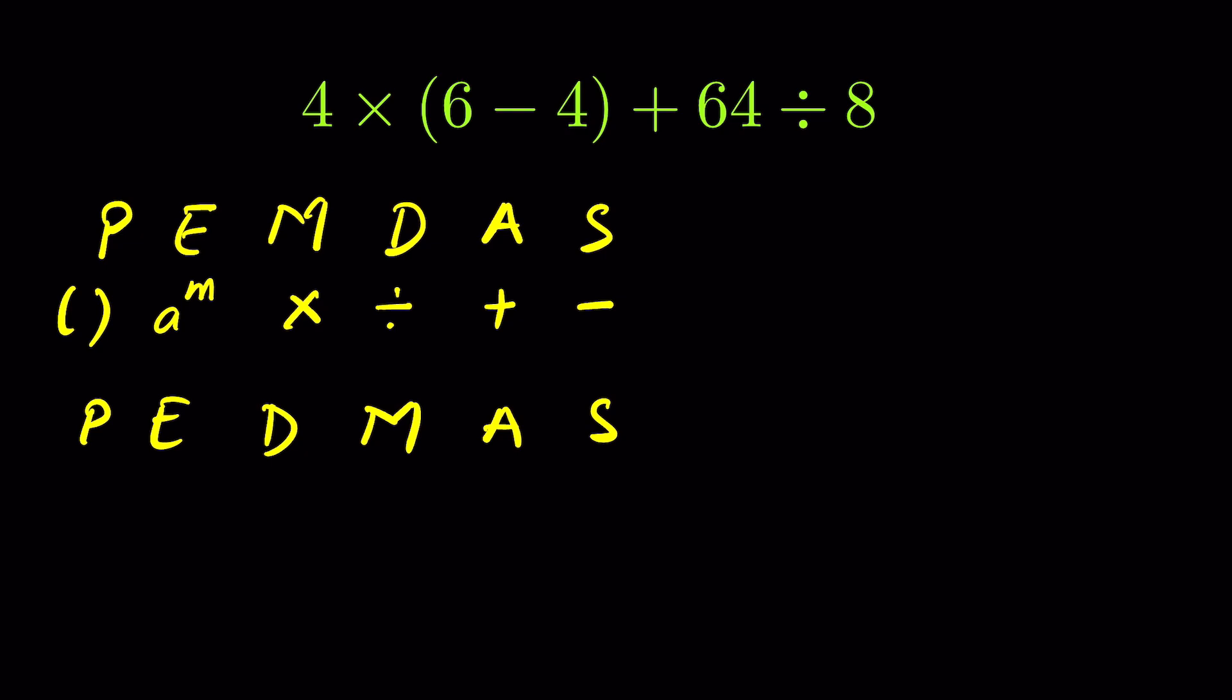However, this doesn't make any difference whether multiplication is written first or division is written first, because they have equal priority and we solve them from left to right, whichever comes first. So it doesn't matter which rule you are following, PEMDAS or PEDMAS. Stick to the rule of left to right for multiplication and division especially. Although addition and subtraction are also grouped together, for addition and subtraction it doesn't make any difference whether you do addition first or subtraction first. You will get the same answer.